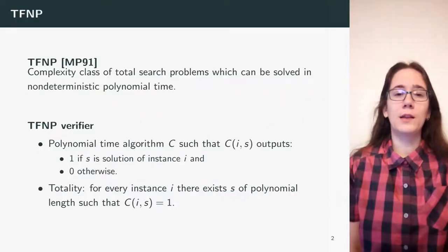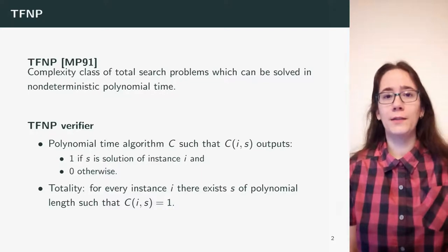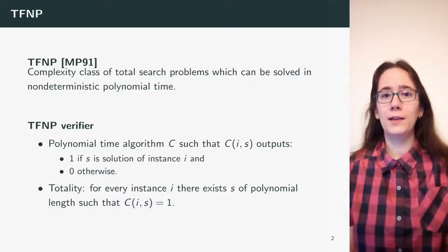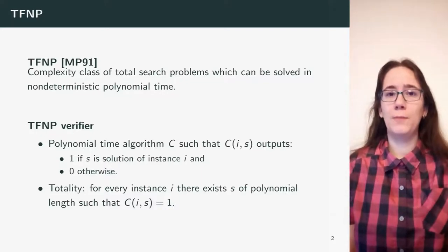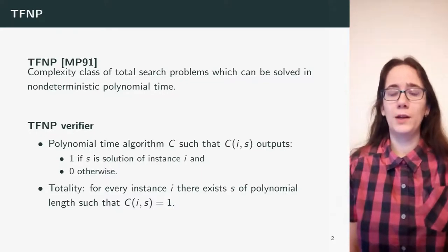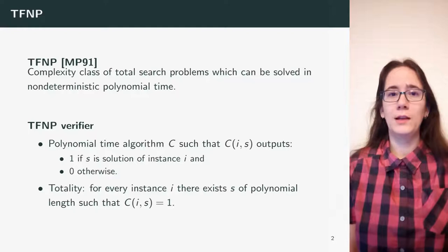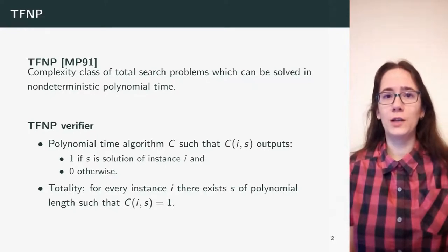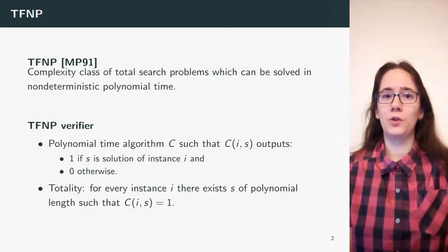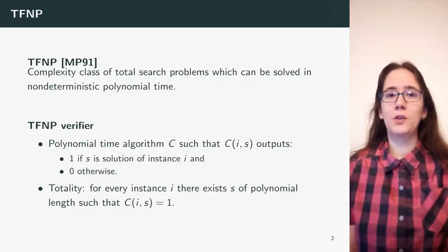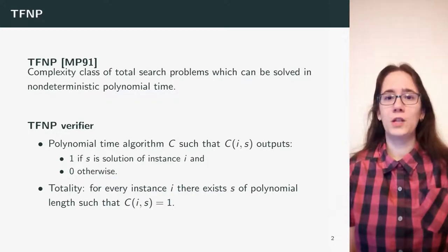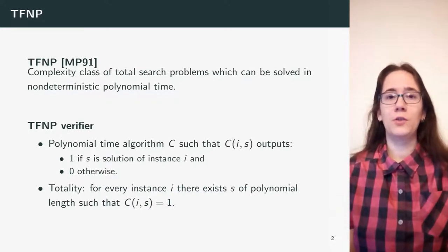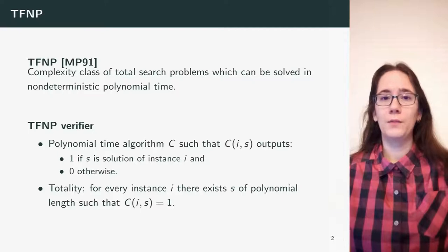The class TFNP was defined in 1991 by Megiddo and Papadimitriou. It's an abbreviation for Total Function Non-Deterministic Polynomial. It's a complexity class of total search problems which can be solved in non-deterministic polynomial time.